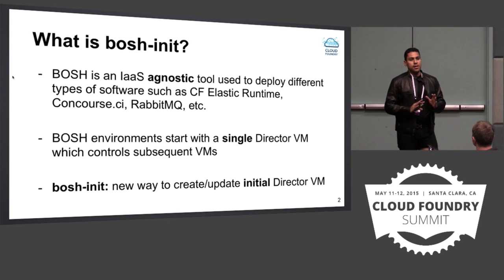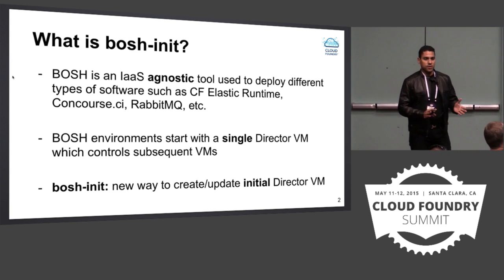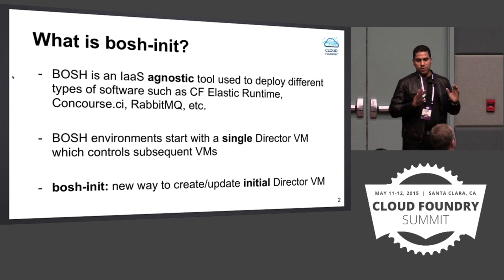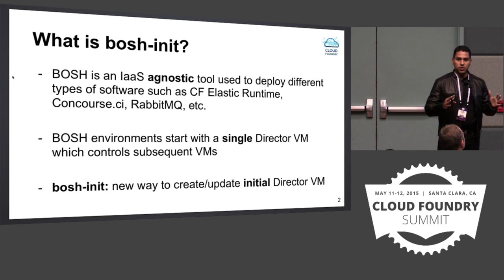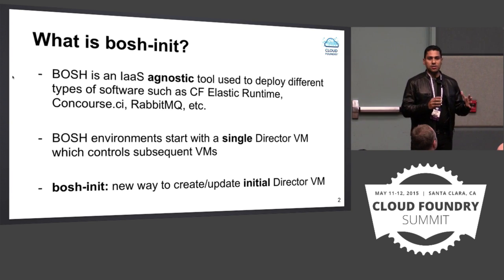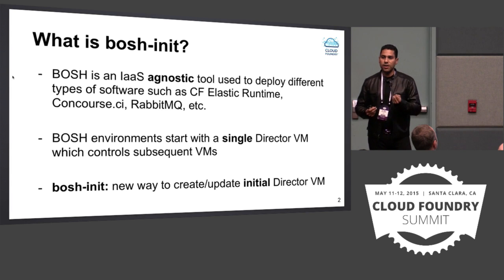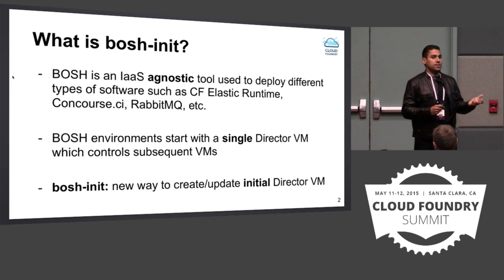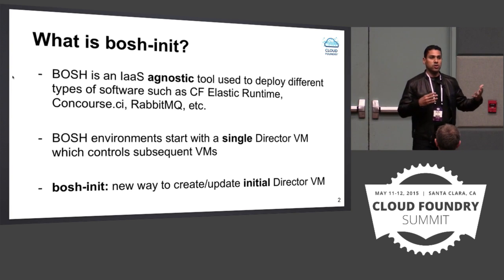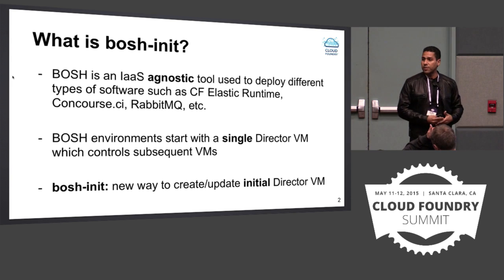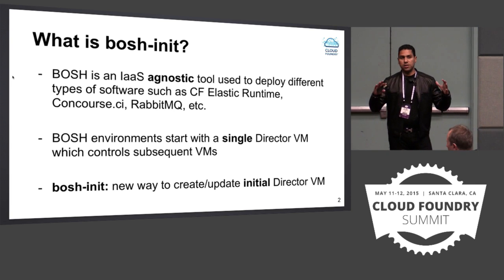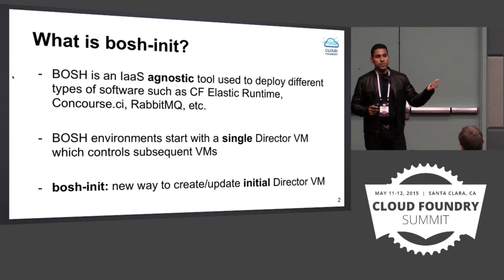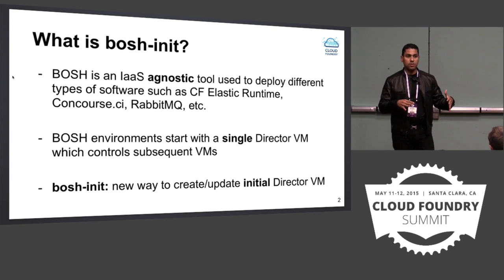So first, what is BOSH? It's an easy question in some ways to answer but also very difficult. The important thing is BOSH is an agnostic tool for deploying infrastructure and in deploying large systems, BOSH init is the bootstrapping of that. BOSH init is that first VM - how do you get that first VM started so that you can do the subsequent deployments that you need? BOSH is agnostic so you could use it to deploy not only CF but also Concourse CI and other large scale cloud projects. BOSH init is new and this is the topic of this talk today.